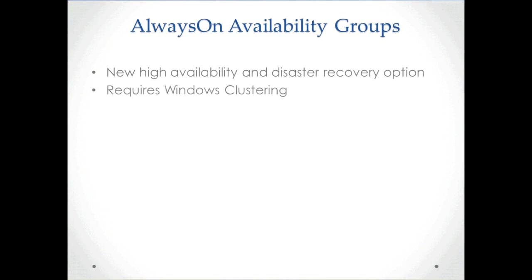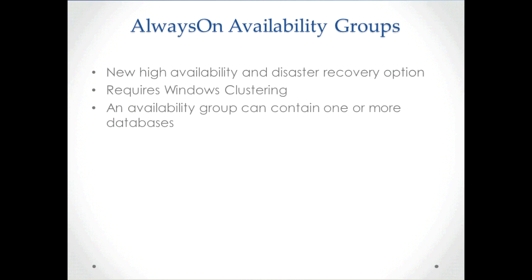Windows clustering is required for this to work. All nodes in the Availability Group need to be in the same Windows cluster. Multiple databases can be added to an Availability Group, and failure of one database fails over the entire group. This is useful for applications that have multiple databases, like SharePoint — if one of the SharePoint databases fails, all the databases in the group fail over to the secondary server.